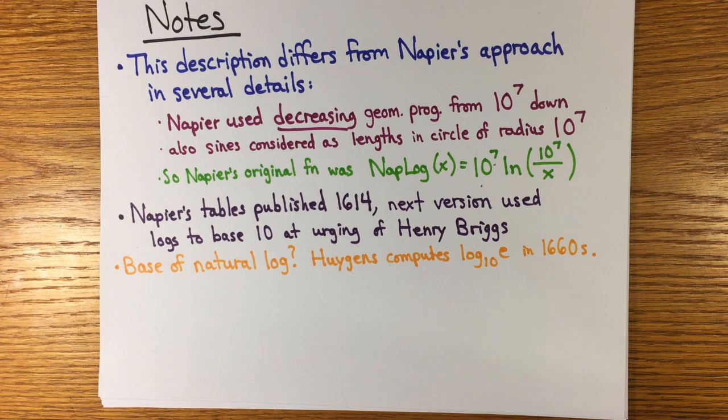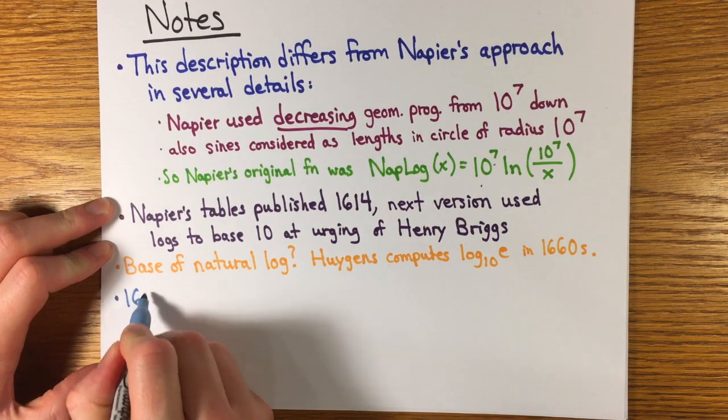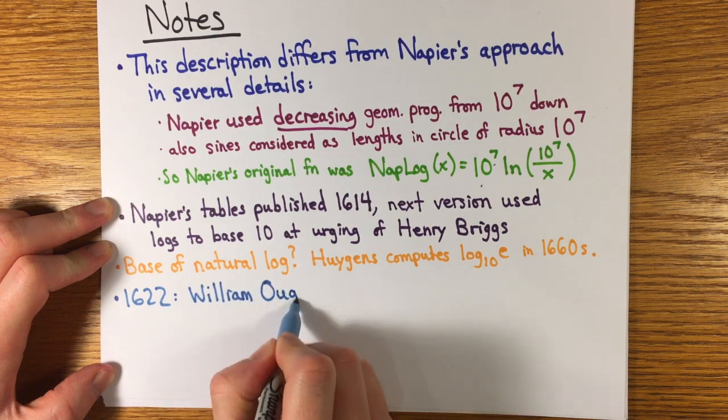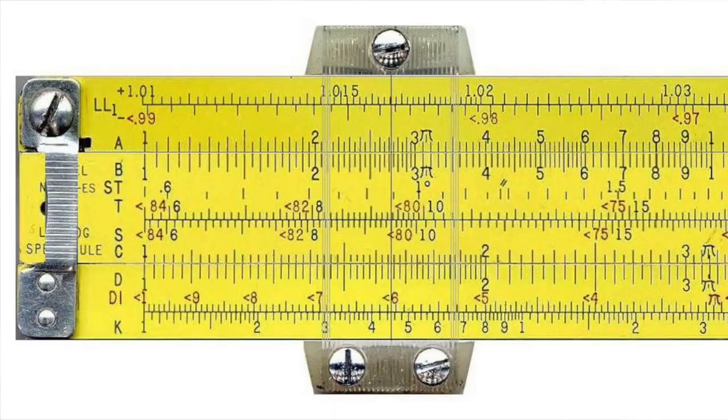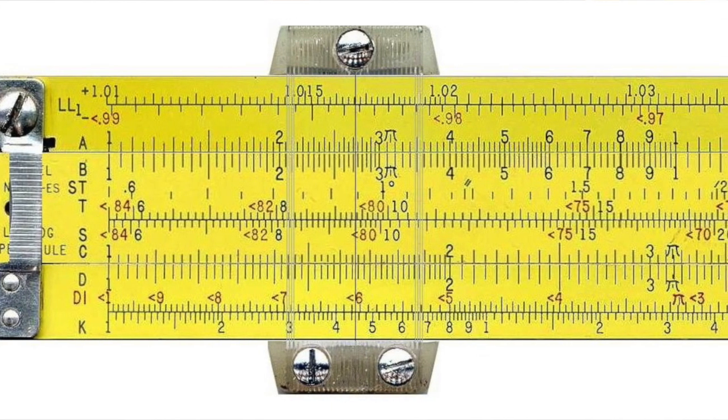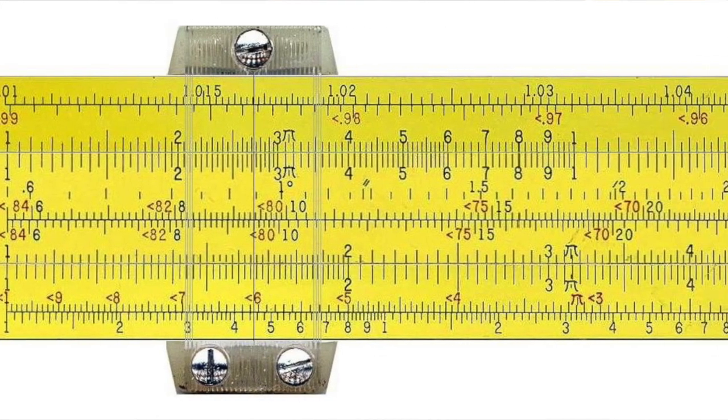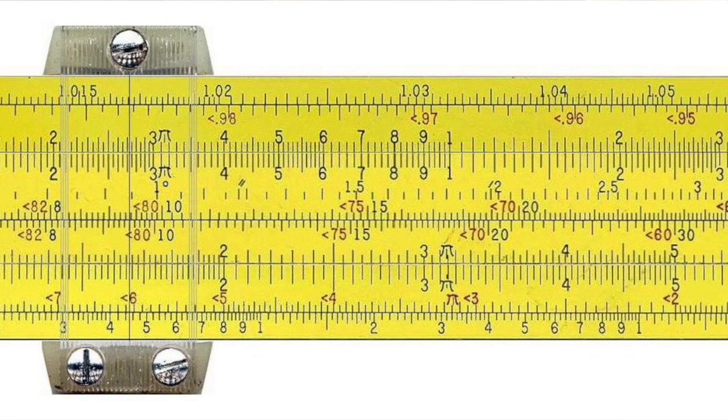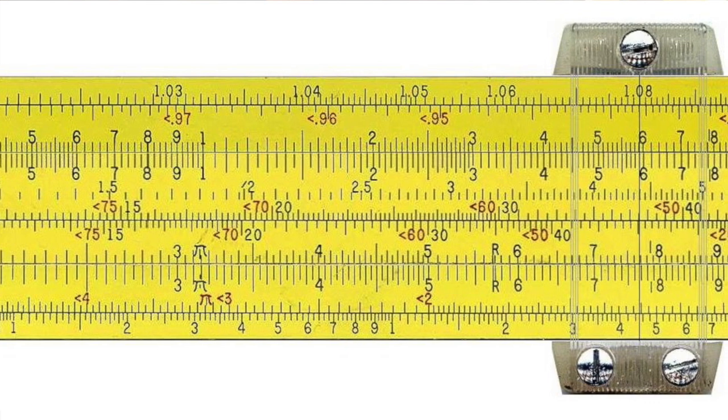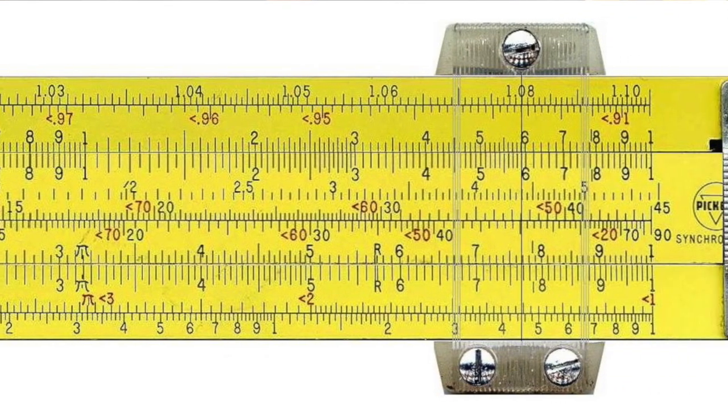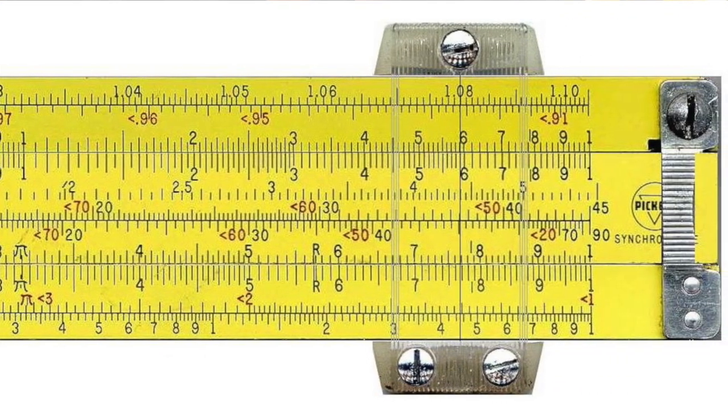Napier died in 1617, and the details of how he constructed his logarithms were published posthumously in 1619. Incredibly, it only took until 1622 for William Oughtred to take Napier's tables and construct the first slide rule, a ruler marked with a logarithmic scale and moving slide to read off multiplied values by adding lengths. This was the most widespread tool for numerical calculation until the personal electronic calculator, and now hardly anyone knows what a slide rule even is.